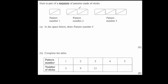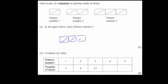Let's look at one more question. It says here is part of a sequence of patterns made from sticks — matchsticks or something like that. Each time we're adding on another rectangle and another diagonal line. So pattern 1 has one rectangle and one diagonal line, pattern 2 has two rectangles and two diagonal lines. Pattern 4 would look something like that.